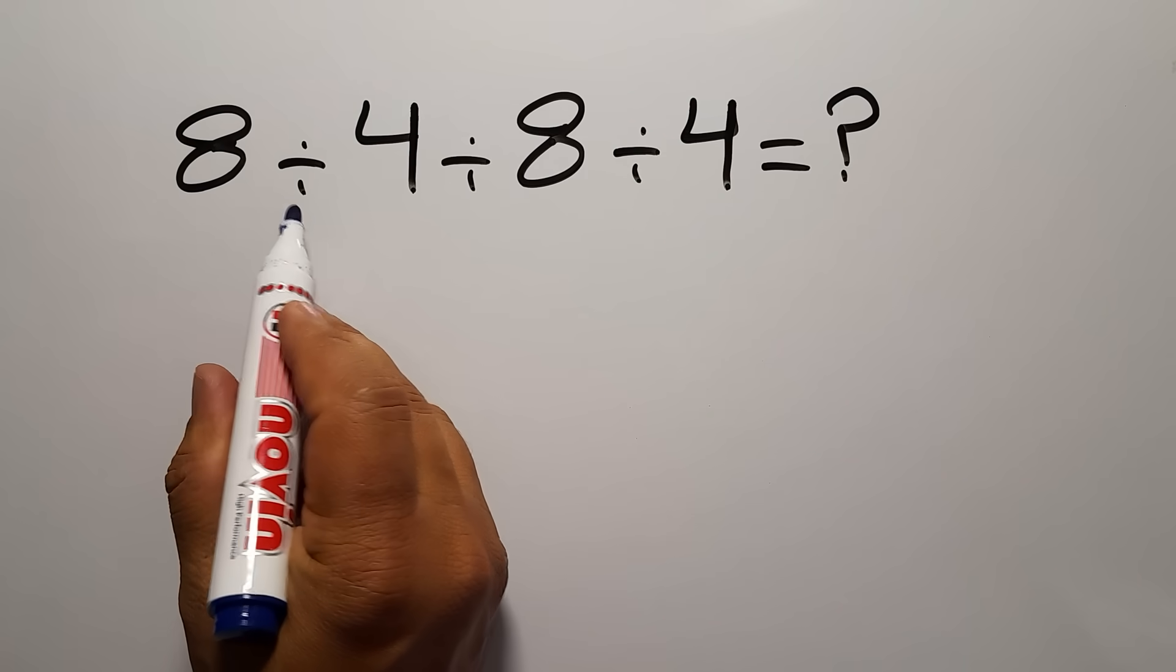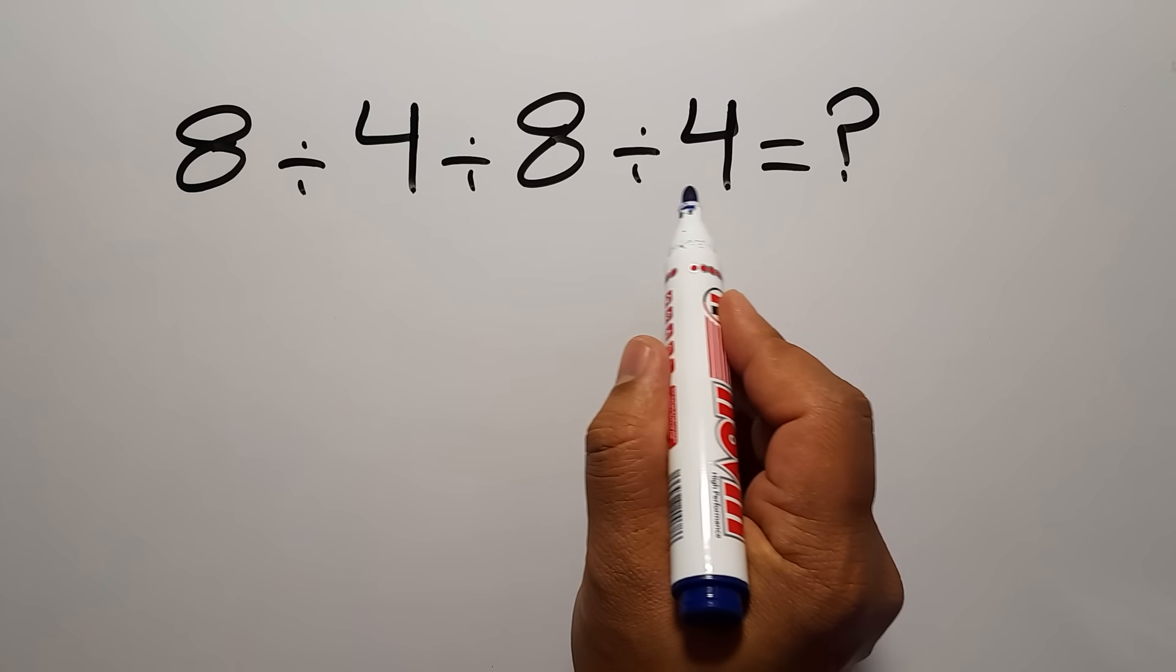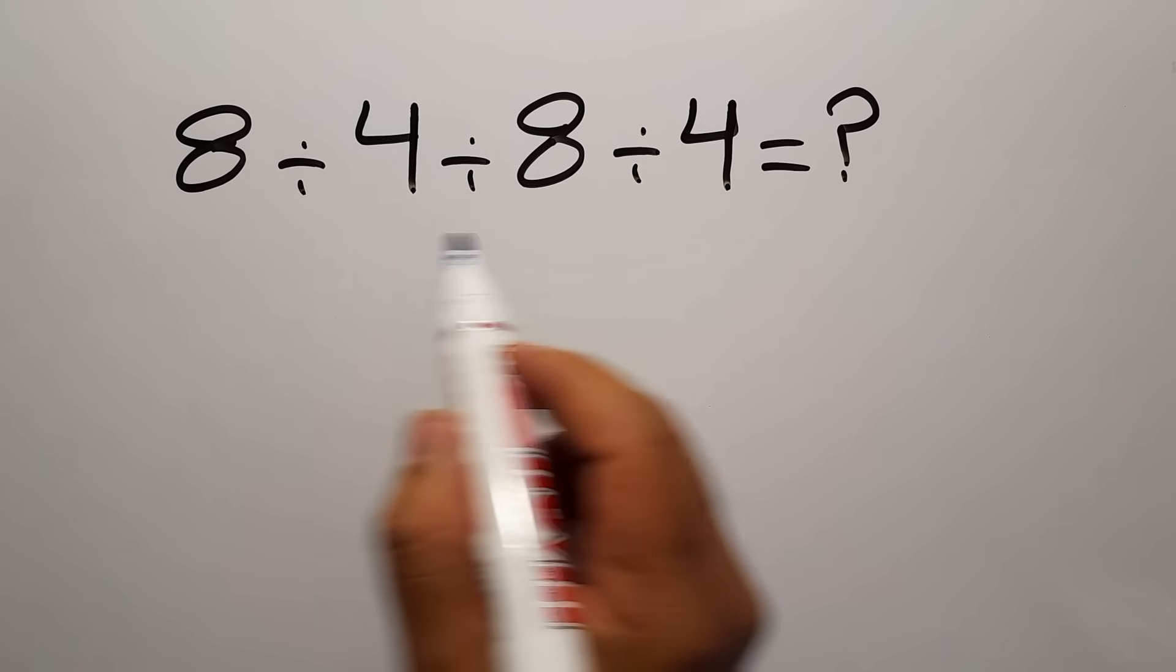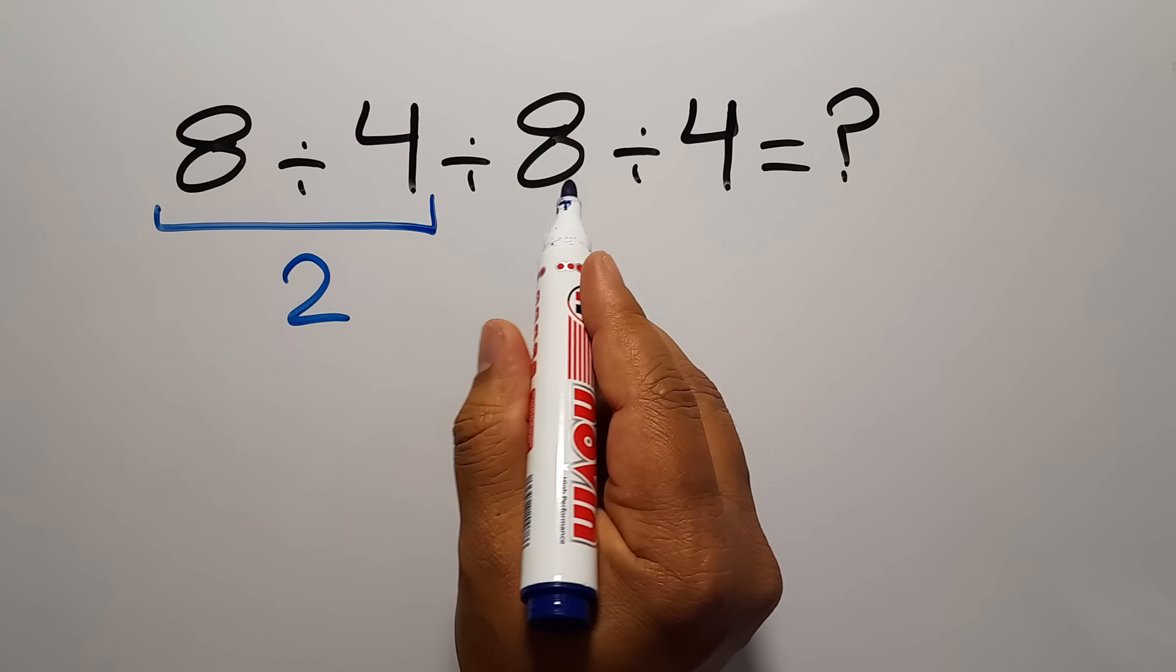8 divided by 4 divided by 8 divided by 4. 8 divided by 4 gives us 2, so...